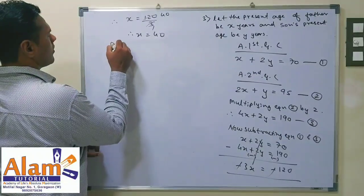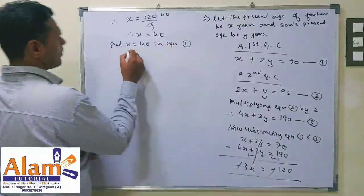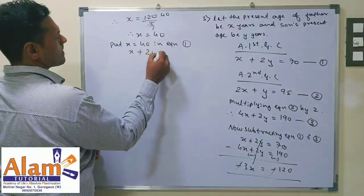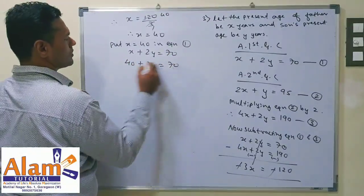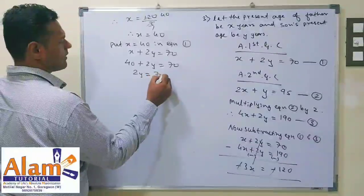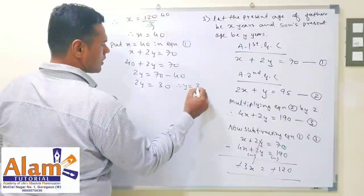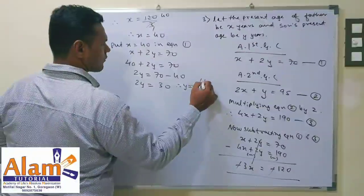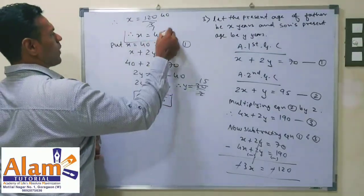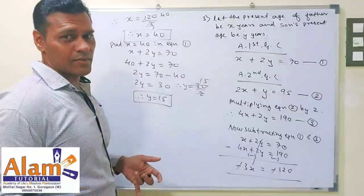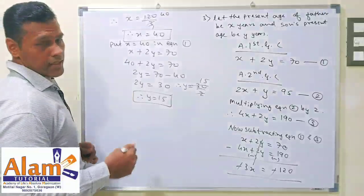Now put x equal to 40 in equation 1. So 40 plus 2y equals 70, therefore 2y equals 70 minus 40, which is 30. So y equals 30 divided by 2, which is 15. Therefore y is equal to 15. Since this is a word problem, the father's present age is 40 years and the son's present age is 15 years.